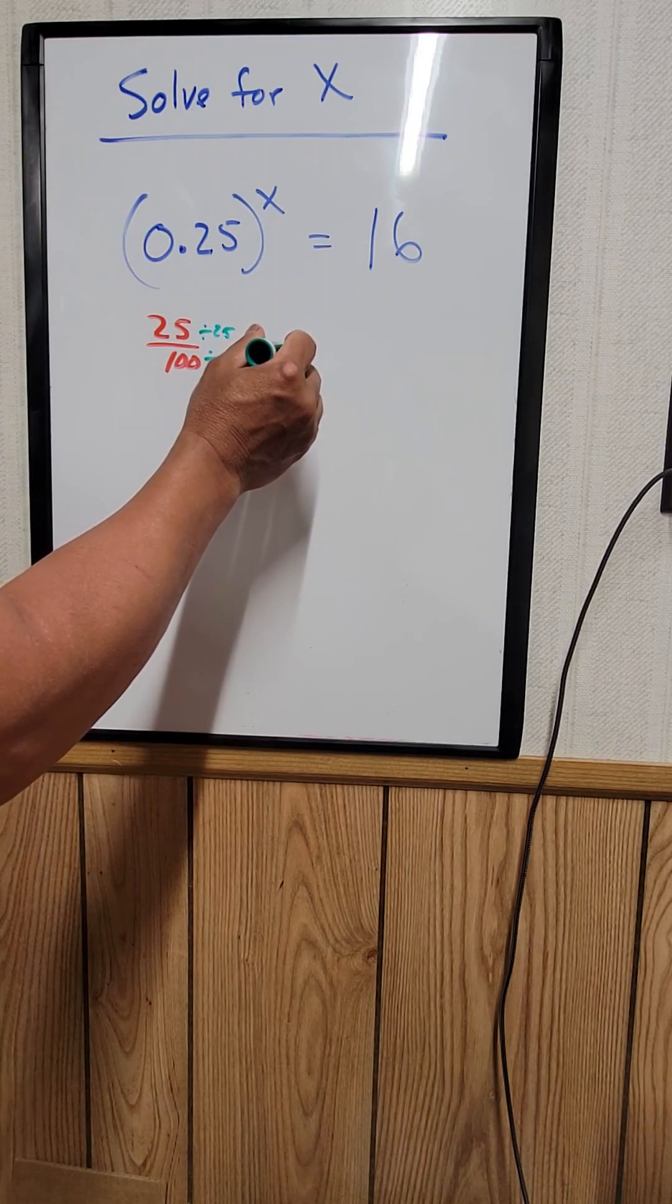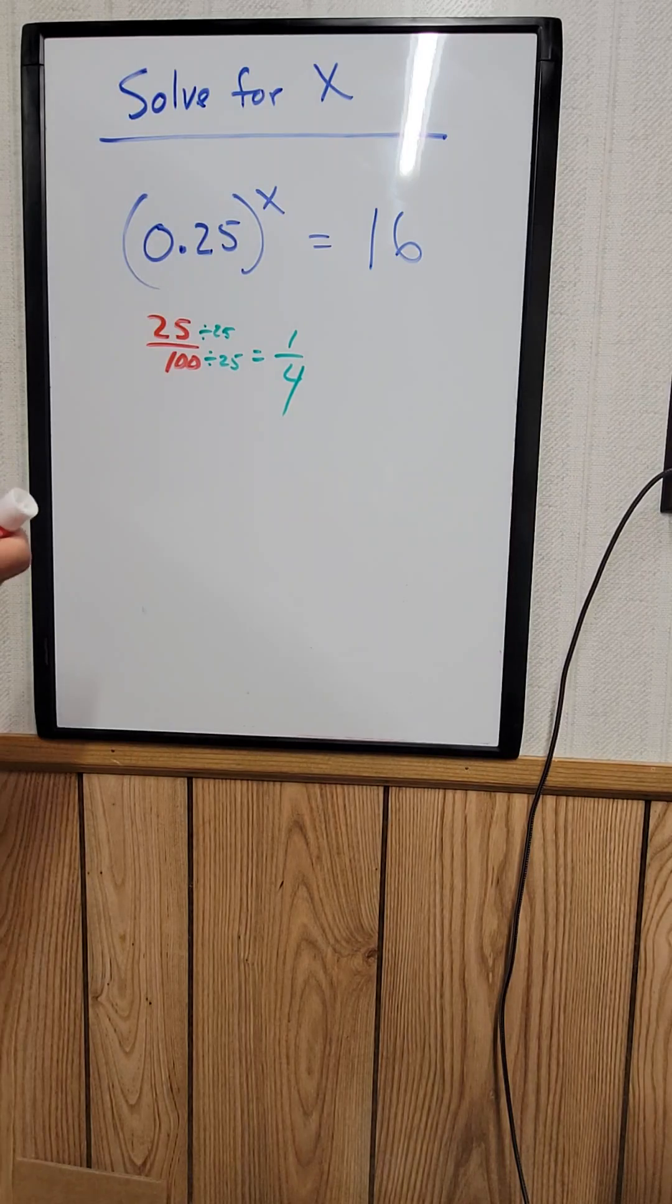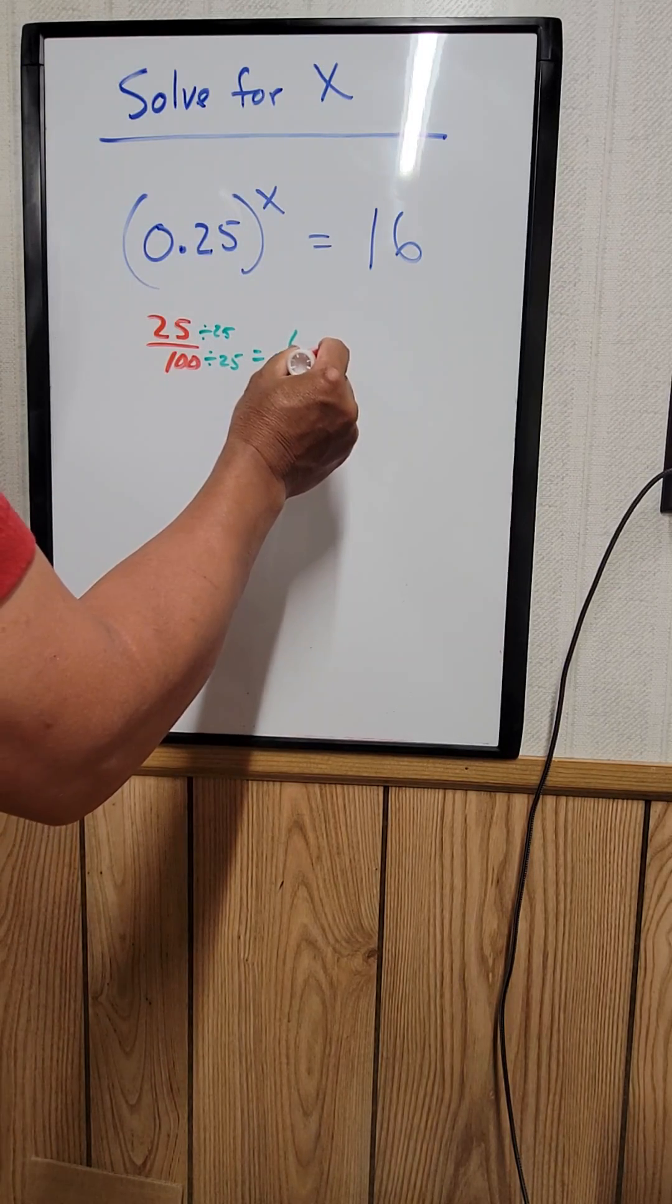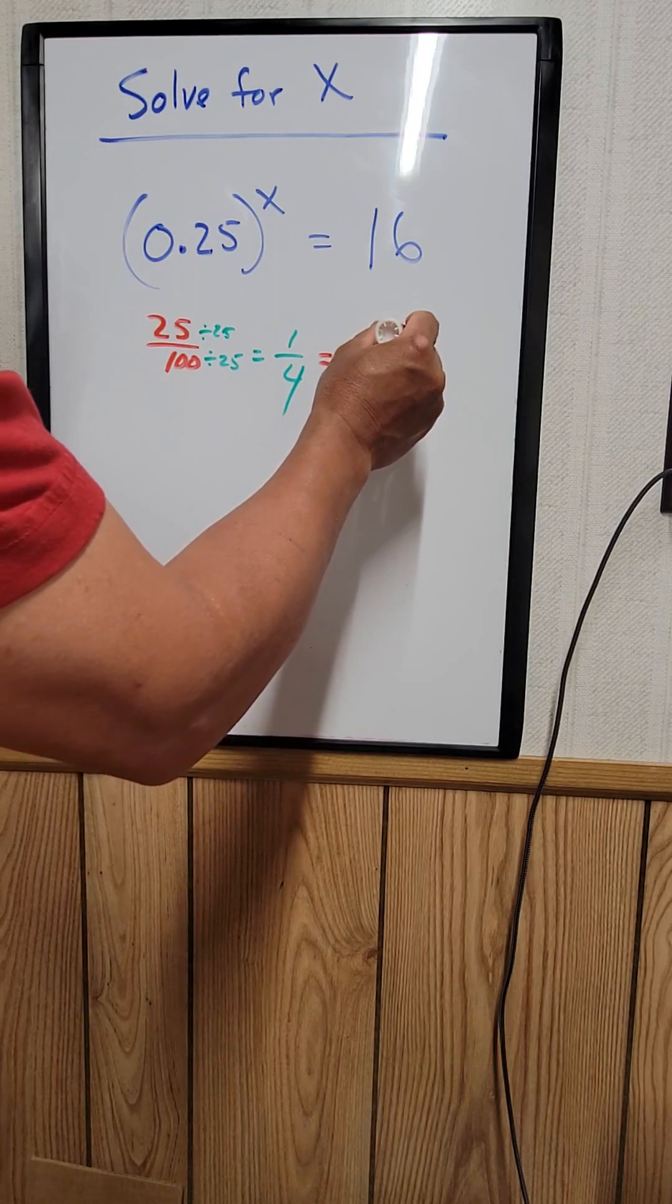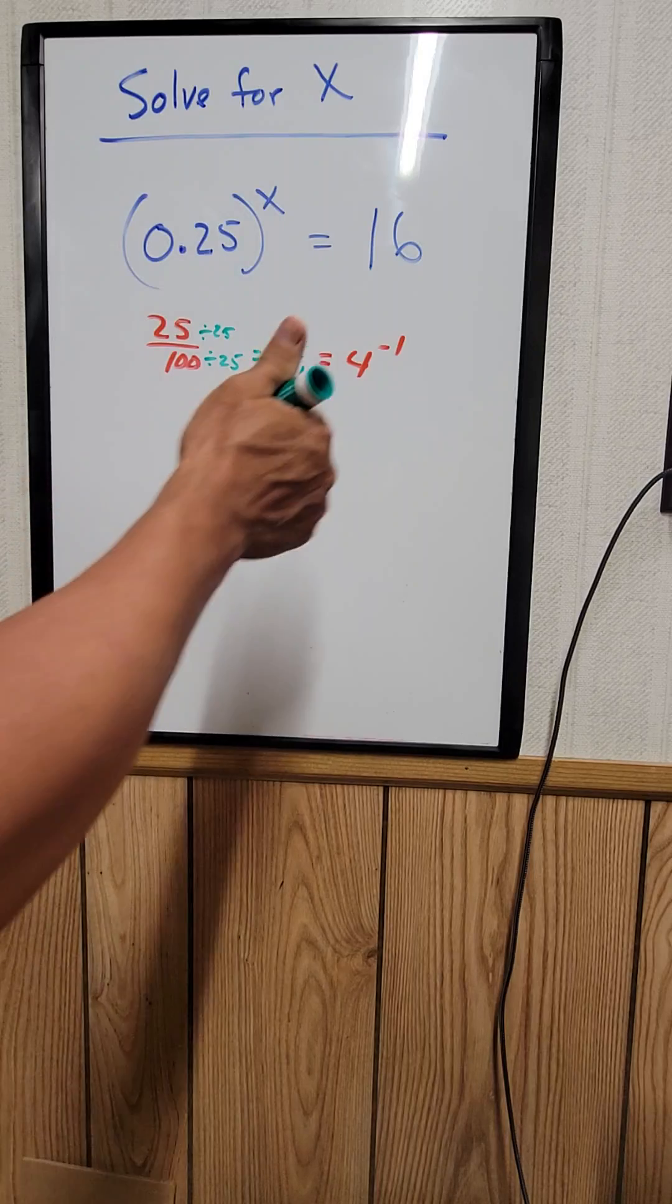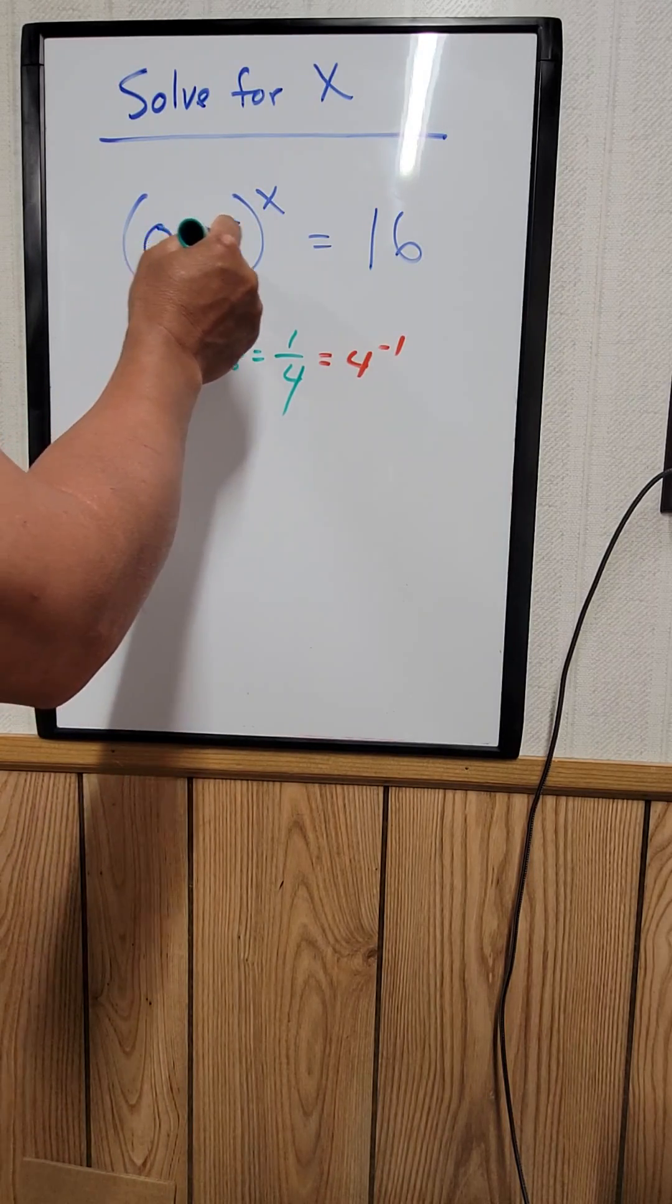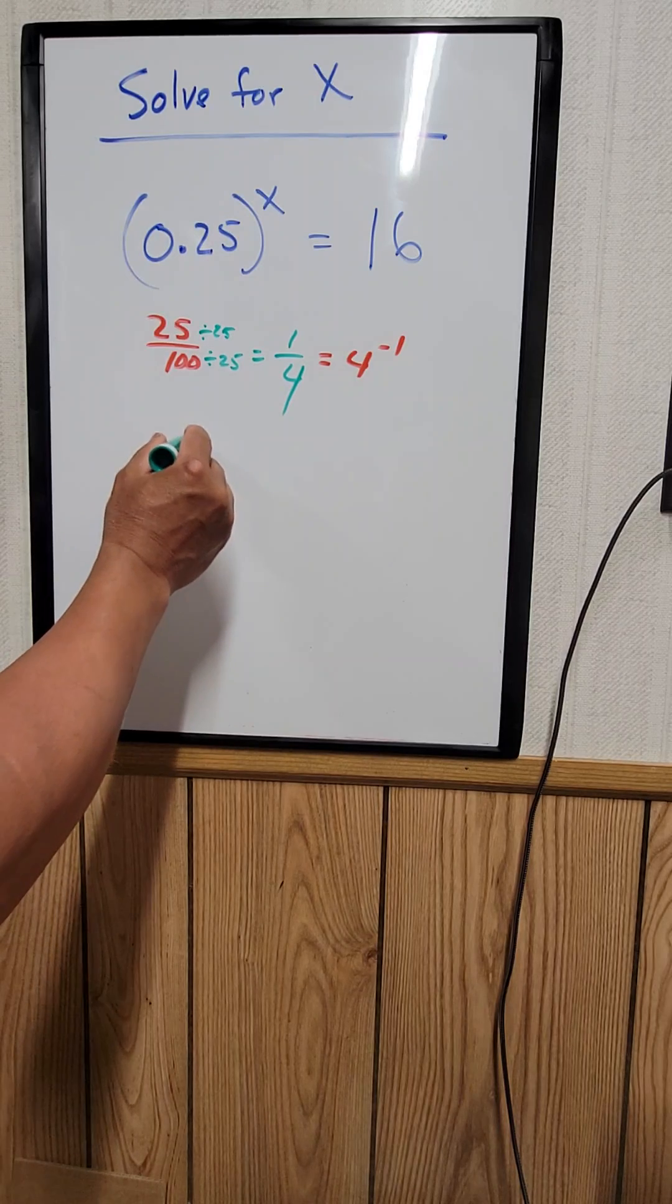1 over 4 can also be written as 4 to the negative 1 - it's the same thing. Now we can take 4 to the negative 1 and substitute it for 0.25, so 4 to the negative 1, the whole thing to the power x, equals...